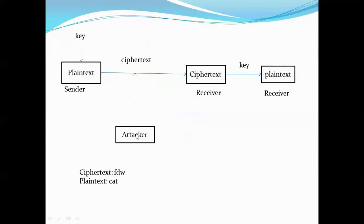If the attacker can recover the exact plaintext 'CAT' from 'FDW' without having the key — using only the ciphertext — that is a successful attack. Also, if the attacker recovers only part of the plaintext, such as 'CA', that is also a successful attack. Similarly, substituting part of the plaintext with another value — for example, replacing 'C' with 'D' — also counts as a successful attack.